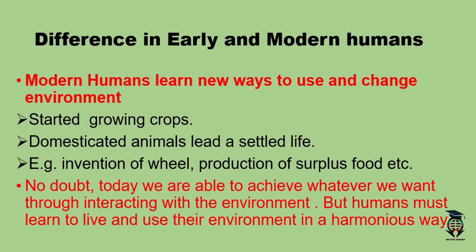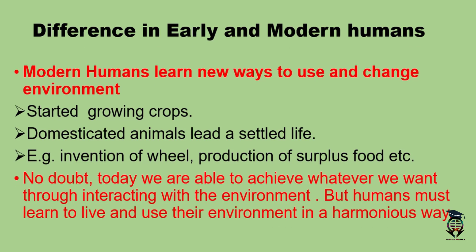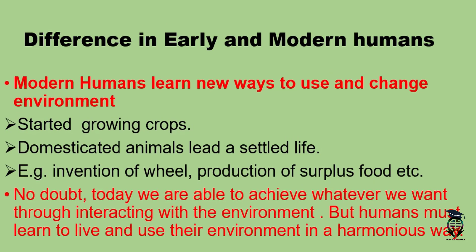No doubt, today we are able to achieve whatever we want through interacting with the environment. But humans must learn to live and use their environment in a harmonious way. We are very technologically advanced and utilizing our environment, but human beings should use the environment sustainably, so that our future generations can also utilize it as much as we do.